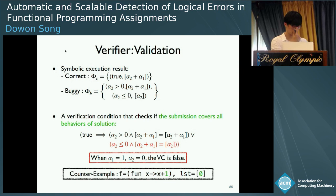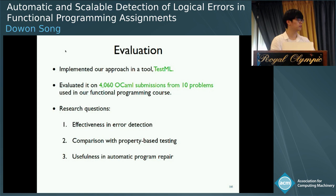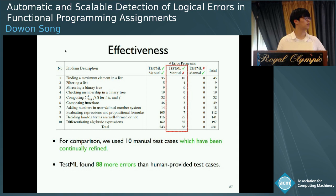Now I will show our evaluation results. We implemented our approach in a tool called TestTML and collected about 4,000 submissions from 10 problems. Through the evaluation, we want to answer three research questions: effectiveness in error detection, comparison with property-based testing, and usefulness in automatic program repair. The time limit for generating one counter-example was set to one minute. This table shows the effectiveness of our technique compared to the manual test cases — 10 input-output examples per problem, continually refined over three years.